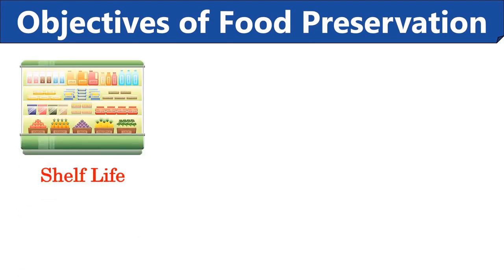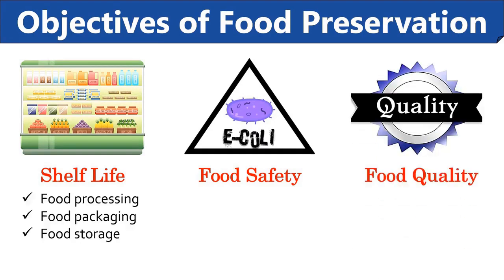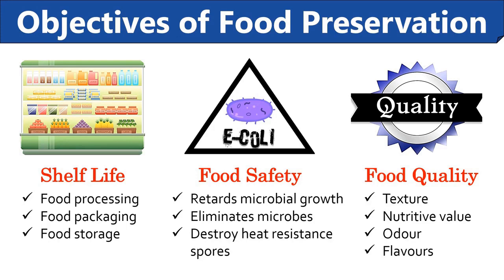The three main objectives of food preservation are shelf life, food safety, and food quality. Food preservation methods include food processing, packaging, and storage to increase shelf life. It ensures food safety by retarding microbial growth, eliminating microbes, or destroying heat-resistant spores, and also ensures food quality by maintaining the intactness of texture, nutritive value, odor, and flavors.